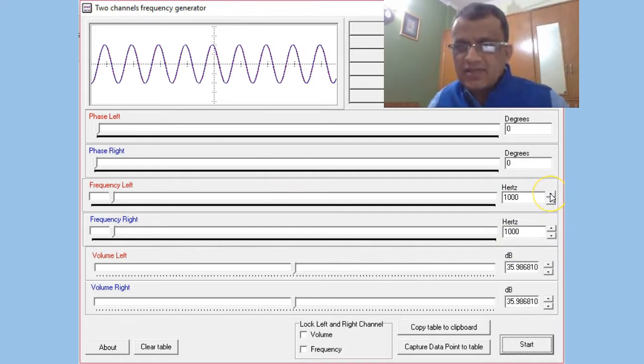Let's start with the difference of 3 Hertz, which means the left speaker will generate a frequency of 1003 and the right speaker will generate a frequency of 1000. The software that I am using to record this screen allows me to capture the sounds generated by my laptop.